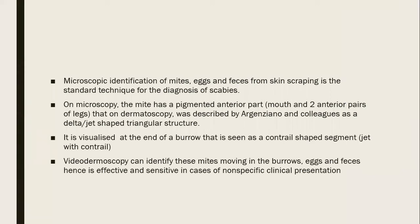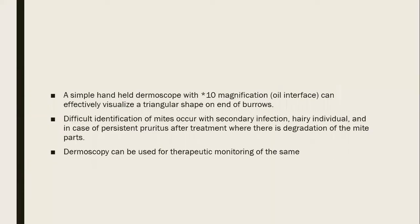The mite has a pigmented anterior part, and the two pairs of legs show under the microscope as a pigmented part. On dermatoscopy, this is said to be jet-like or a delta, or more commonly a triangular structure. It is visualized at the end of a burrow as a contour-shaped segment, and at the end you see the triangular structure. Those able to use video dermoscopes can actually see the mites move in the burrow, and can appreciate the eggs and feces even more. Using a simple handheld dermatoscope at active turn magnification with an oil interface, you're able to see this shape.